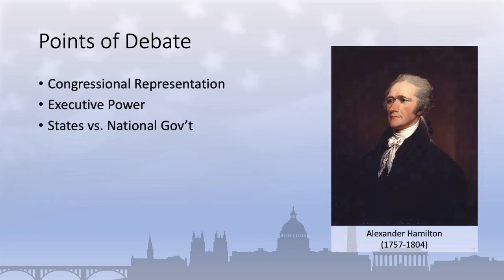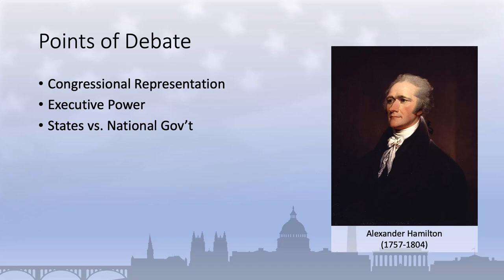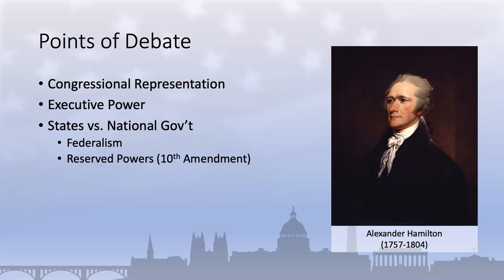The question of how to balance the powers of the national and state governments was comparatively easy to resolve at the convention. There was agreement early on that a system of dual or shared sovereignty would be necessary. Such a system could divide power between the national and state governments, each of which would have preeminence in some areas and be subservient in others. We explore this system—generally referred to as federalism—in another video. But for now, a couple of constitutional clauses are sufficient. First, the 10th Amendment to the U.S. Constitution, sometimes referred to as the Reserved Power Clause.